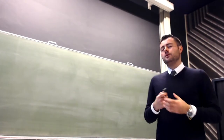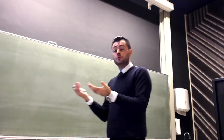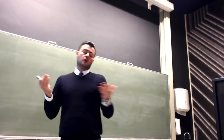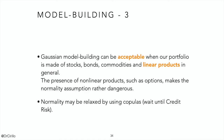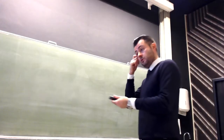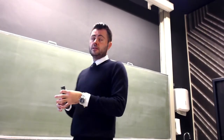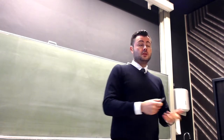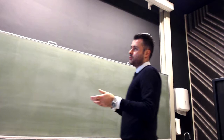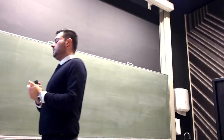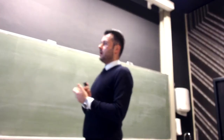Typically, you should have a portfolio that only contains stocks, bonds, and linear products on stocks and bonds. But we know this is not true, because all banks will have options and credit risk derivatives that are not linear. As soon as you move away from linearity of products, normality does not work.